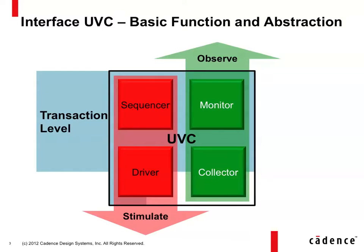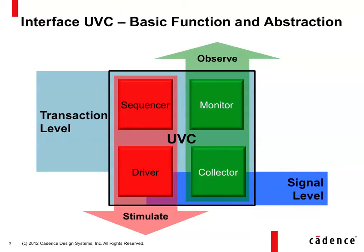Interface UVCs operate at different abstraction levels. The top components — the sequencer and the monitor — are always at the transaction level, so they are only dealing with transactions. At the bottom, we have a driver and collector, and those components can bridge the gap between the transaction level and the signal level. So we have nice symmetry here: a driving path, an observing path, and different levels of abstraction.